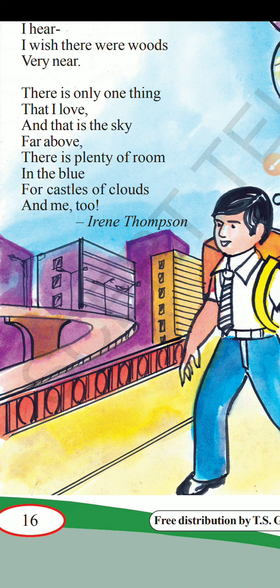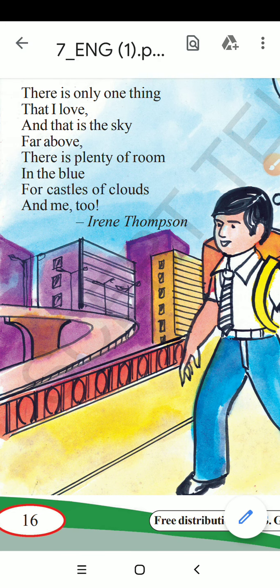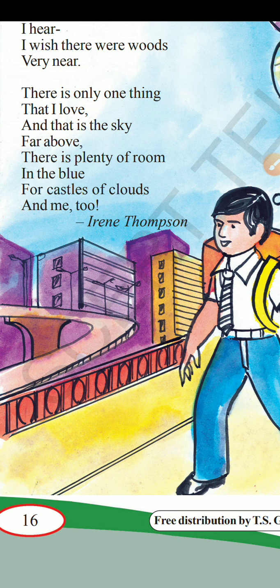Now there is only one thing that he loves, and that is the sky far above. There is plenty of room in the blue of blue for castles of clouds and me too. He loves the sky because it is very cool and comfortable — there is no disturbance, no traffic, no trams, no smoke, nothing. The sky is very neat, very clean, and very spacious.